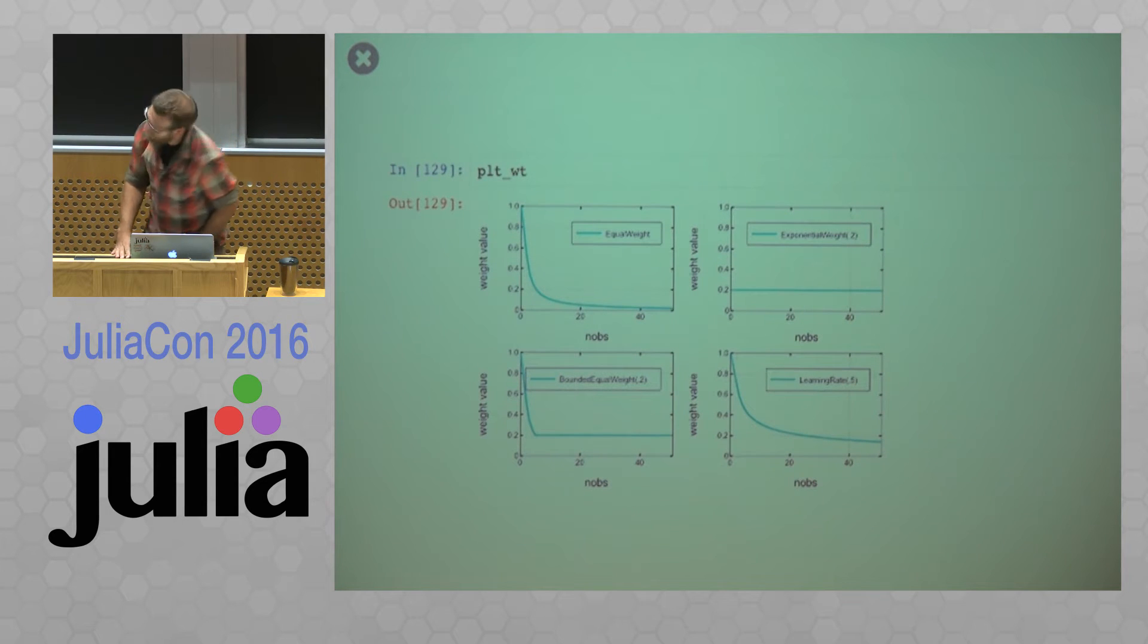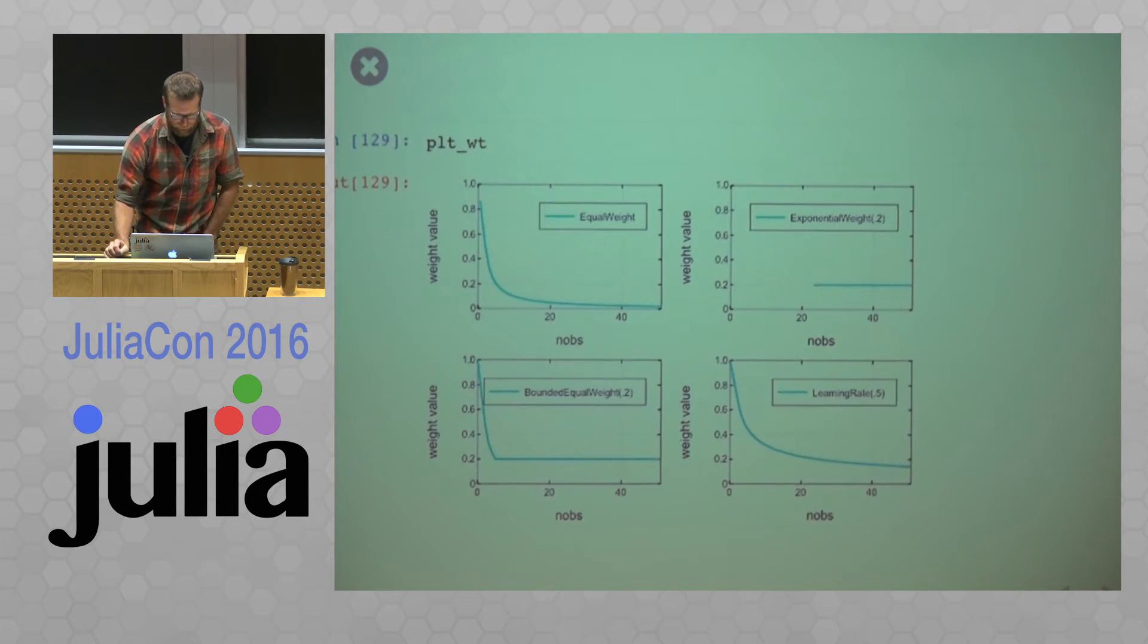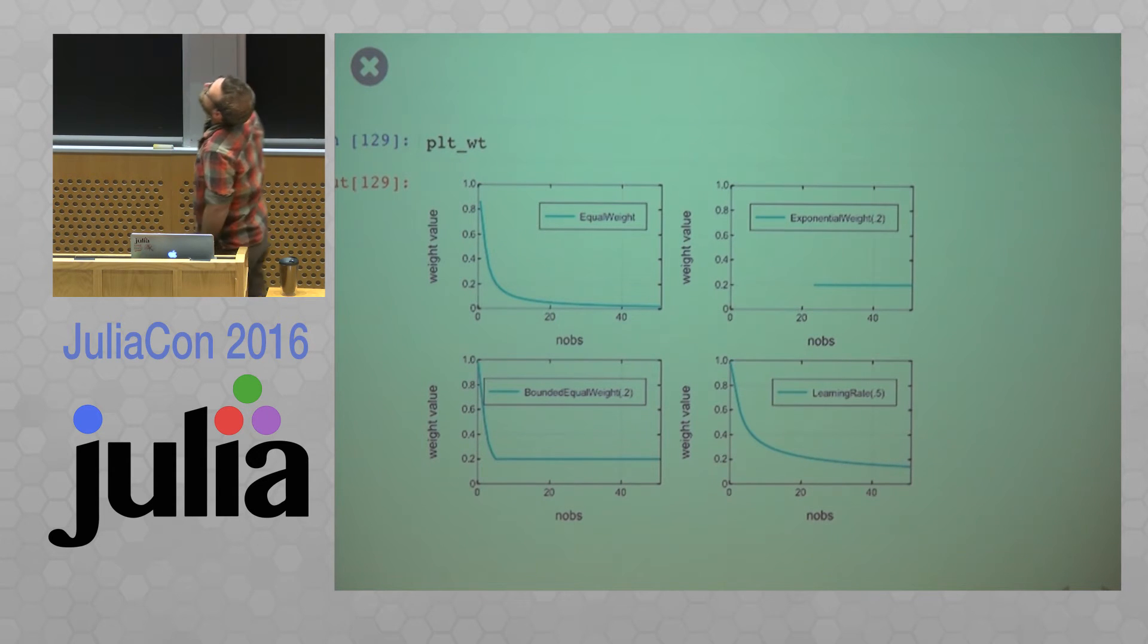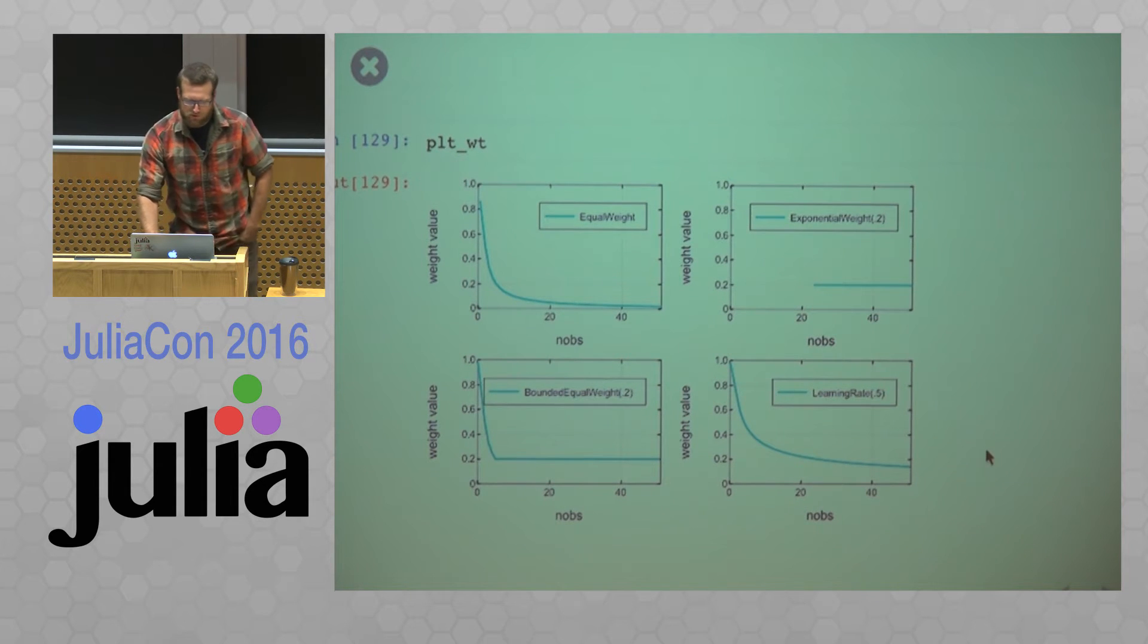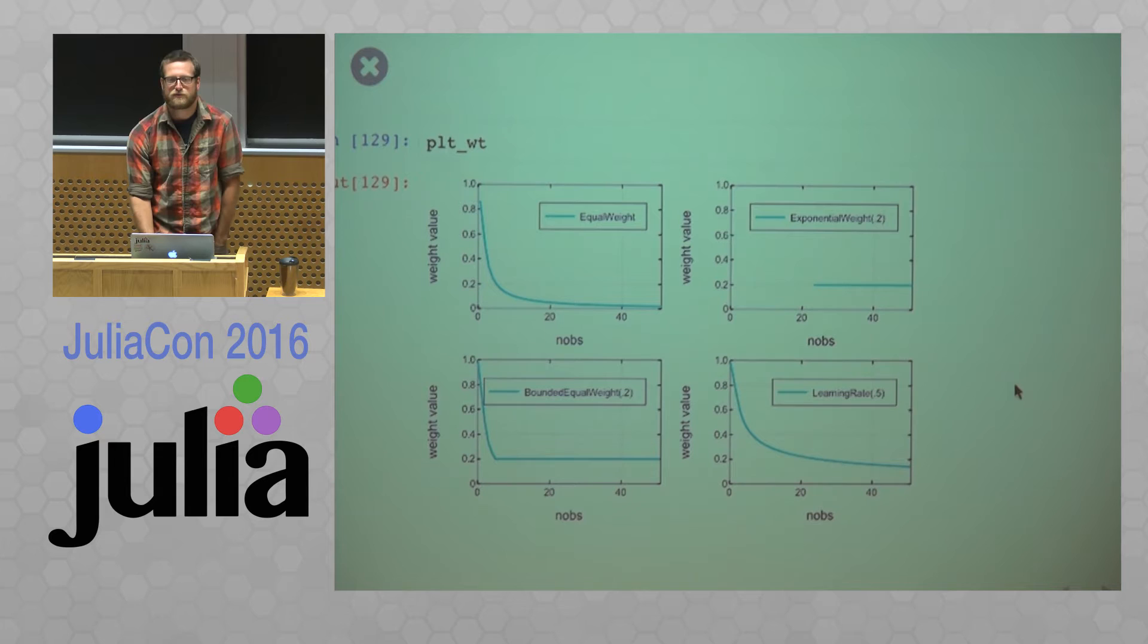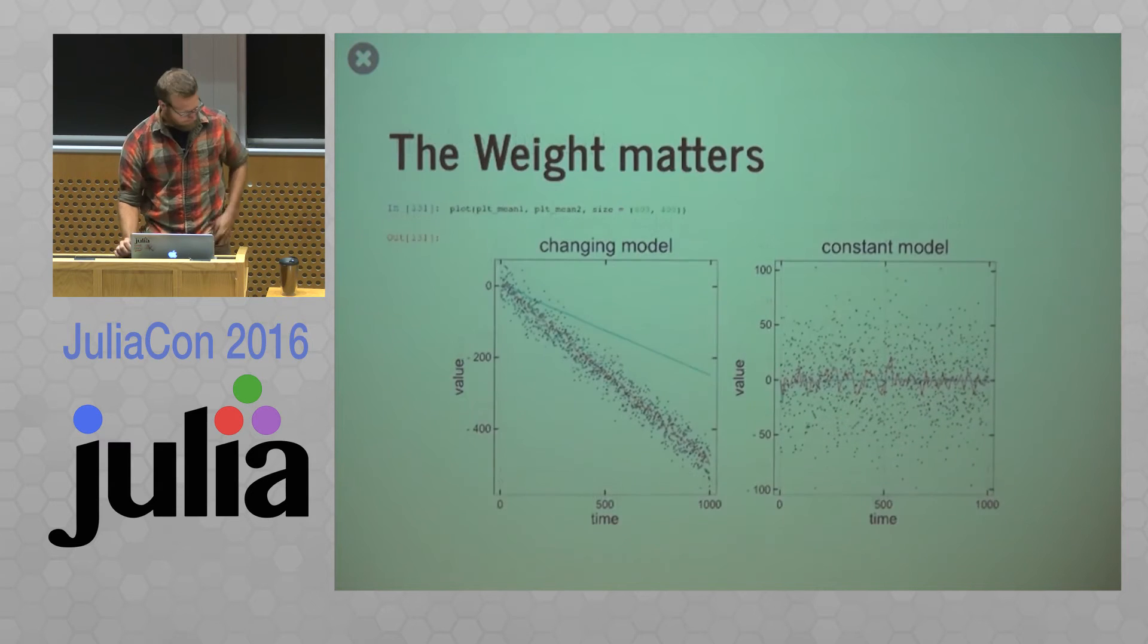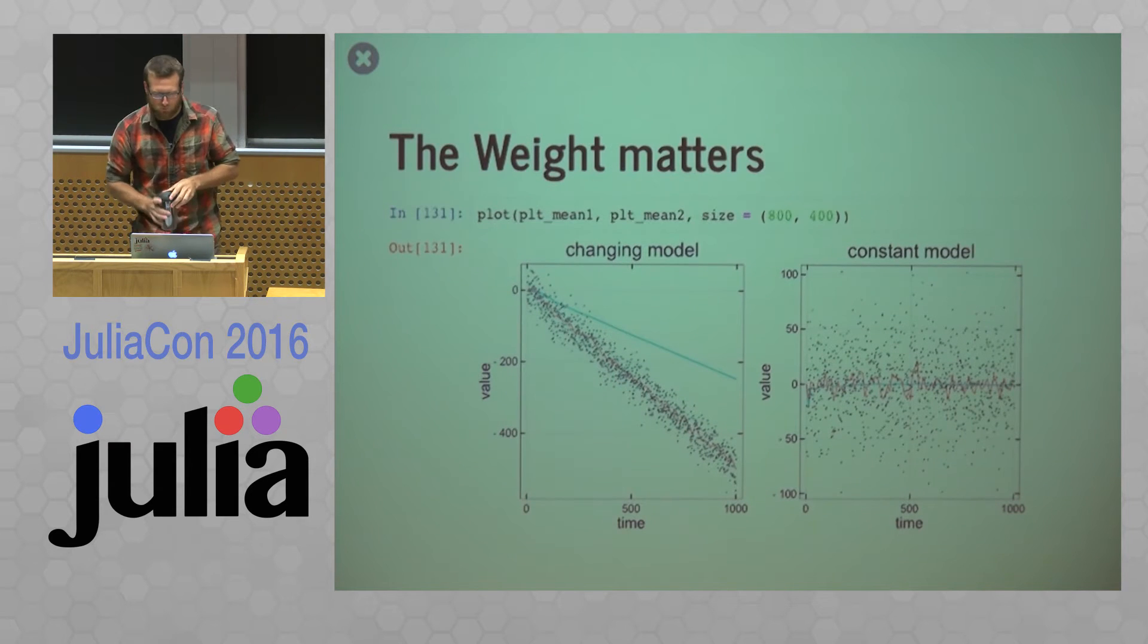So here's a plot of those weights. What they look like. I don't know if you can read those. Make it a little bit bigger. So the top left is equal weight. So that is 1 over t. Jupiter is displaying that a little strange. So the top right one, that line should be constant across 0.2. So that's an equal weight with 0.2. There's a bounded equal weight. So here we're using equal weight. And then we hit that cutoff and stay constant. And then there's a learning rate of 0.5. So this is using 1 over square root t as a weight. So we can see how these things are going to allow new observations to affect the objects.